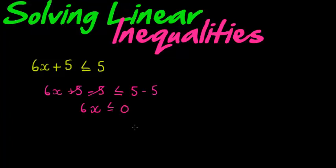So now we have that 6x is smaller than 0, which means that now when I divide with a 6 on both sides to get my X alone, I get that X is still smaller or equal to 0. So if I had to go and plot this...